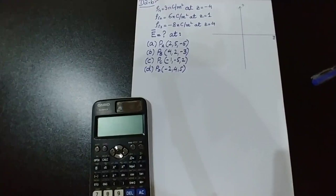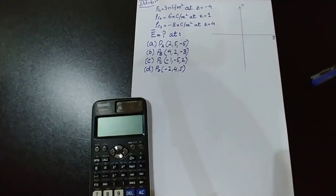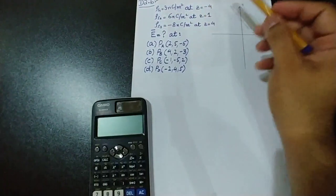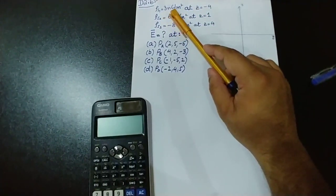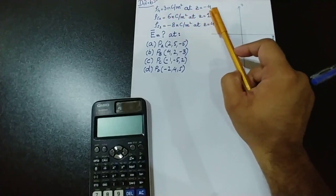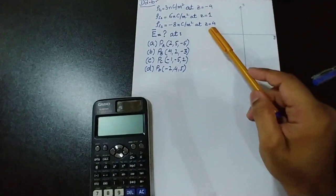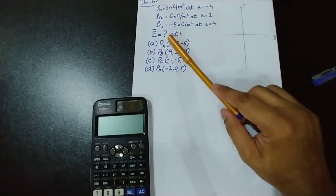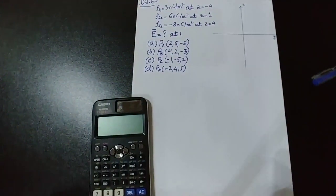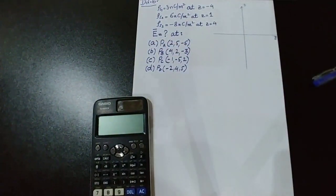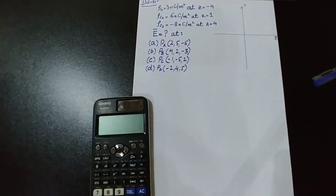This problem relates to the infinite uniform sheet of charges. The charge distribution is given — a two-dimensional sheet of charges with constant magnitudes. The first charge density of 3 nanocoulombs per meter square is located at z = -4, the second at z = 1, and the third at z = 4. We are asked to find the electric field intensity in vector form at four given points.